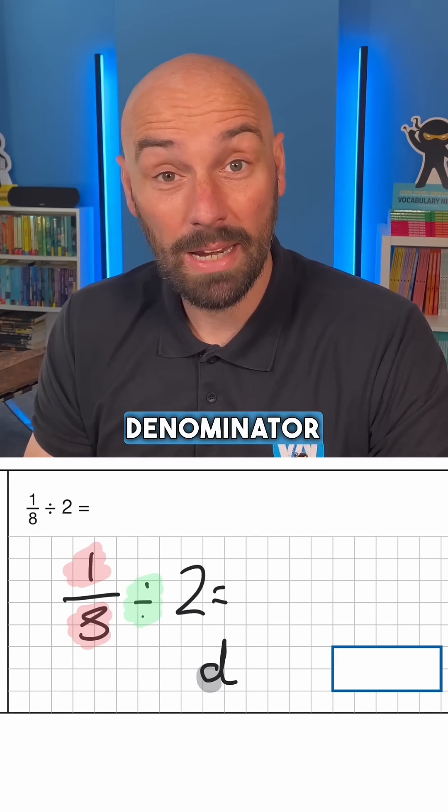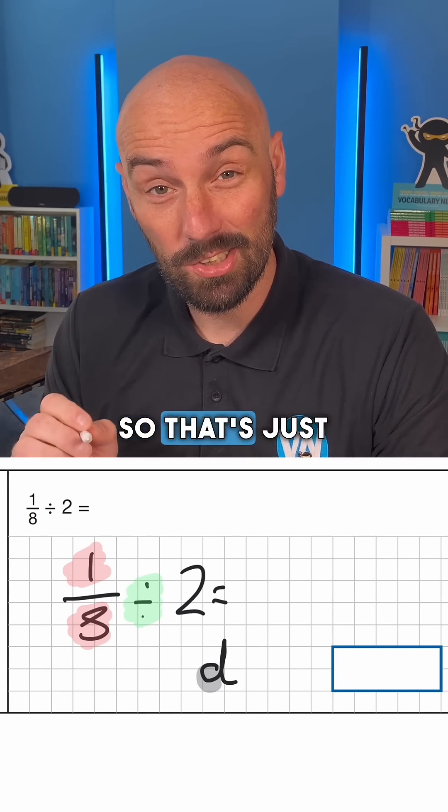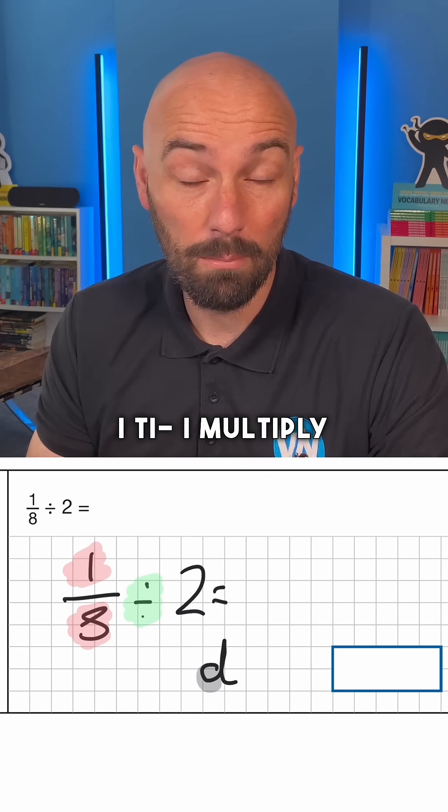Divide begins with D. Denominator begins with D. So that's just that little clue: we multiply the denominator.